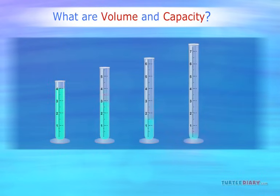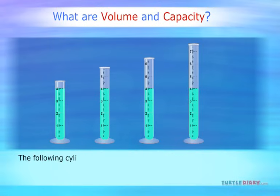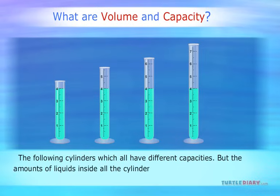Sometimes the amounts of liquids inside different bottles or jars are the same, but the capacities of the containers are not the same. The following cylinders all have different capacities, but the amounts of liquids inside all the cylinders are the same.